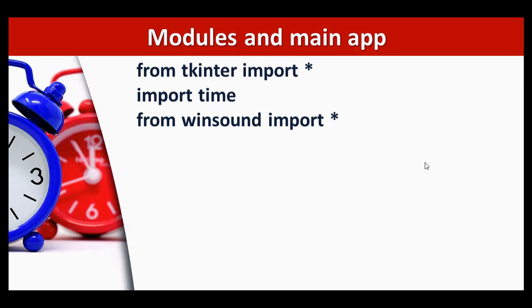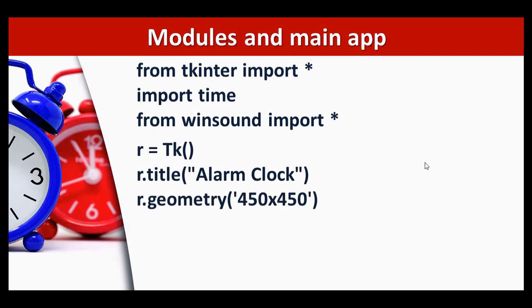After this we're going to create the main application window by creating an instance for the Tk class. I have named it as r, and then we can set the title for the root window and set it as Alarm Clock. You can also set the width and height of the application.